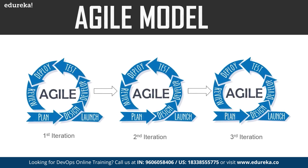The next model is the agile model. In this model, the software is broken down into various iterations. Each iteration has various phases such as planning, design, development, and so on. The duration of each iteration is generally two to eight weeks. In the agile model, you release the software in the first iteration, then gather feedback from end users about the application and try to incorporate those changes into the second iteration, and then release the software again, and so on.